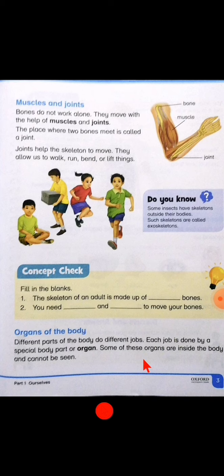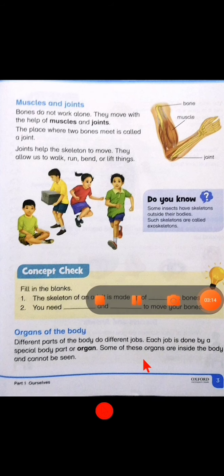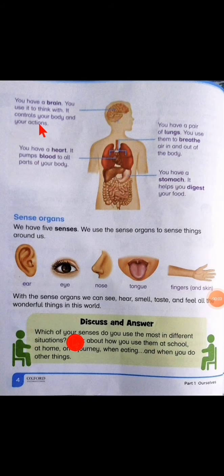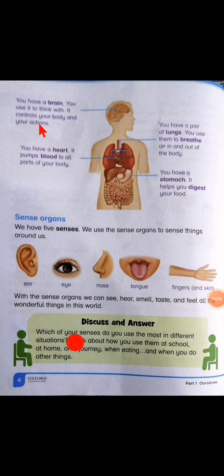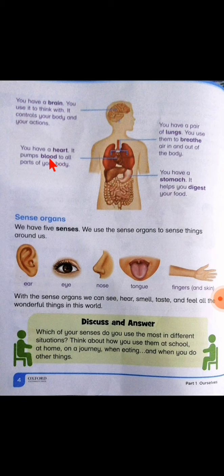Now turn the page and open page number four. You have a brain — you use it to think with; it controls your body and your actions. You have a heart — it pumps blood to all parts of your body. You have a pair of lungs — you use them to breathe air in and out of the body.